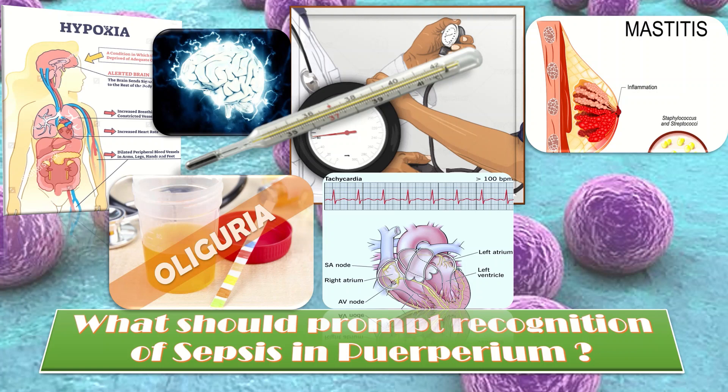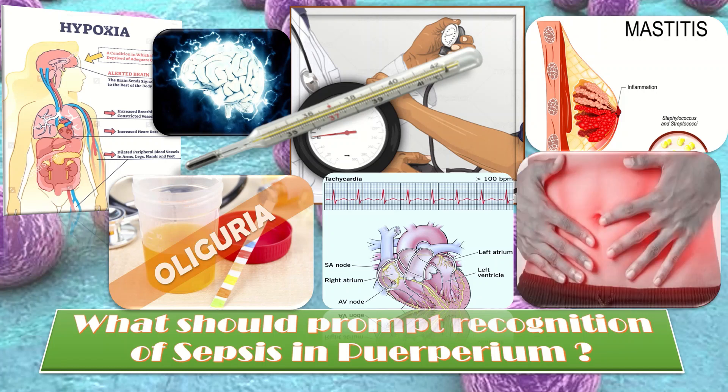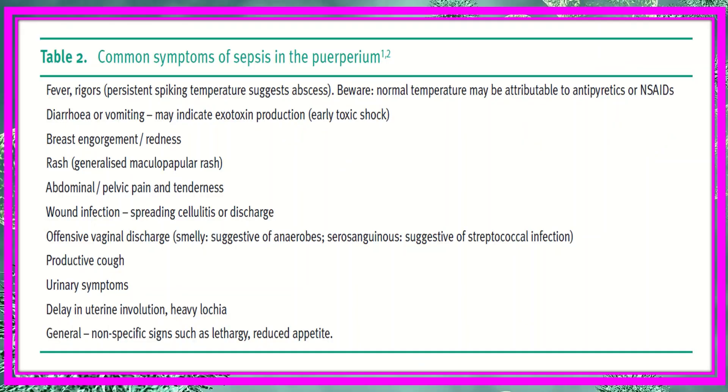These signs, including pyrexia, may not always be present and are not necessarily related to the severity of the sepsis. Mastitis must never be overlooked. Abdominal pain, fever greater than 38°C, and tachycardia greater than 90 beats per minute in the puerperium are indications for intravenous antibiotics. NSAIDs should be avoided for pain relief in cases of sepsis as they impede the ability of polymorphs to fight group A streptococcal infection.